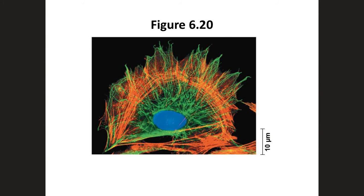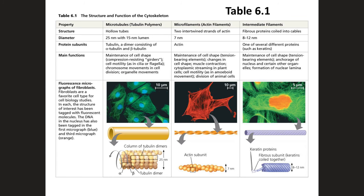The cytoskeleton of the cell is a network of fibers extending throughout the cytoplasm. It organizes the cell's structures and activities, anchoring many organelles to the cell itself. It is composed of three types of molecular structures: microtubules, microfilaments, and intermediate filaments. The role of the cytoskeleton is to support the cell and also for motility in cells that are able to be mobile. This table shows the differences between microtubules, microfilaments, and intermediate filaments.